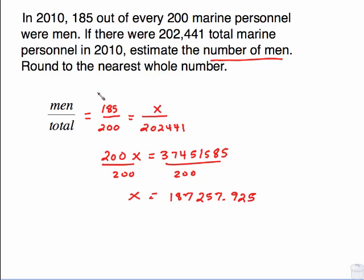And x is 187,257.925. This is asking me to round to the nearest whole number, which means this right here needs to be my last number. This 9 right here is big enough to make this round up. So this becomes 187,258. So we're estimating the number of men in the Marines was 187,258.